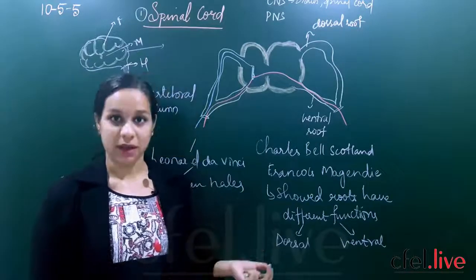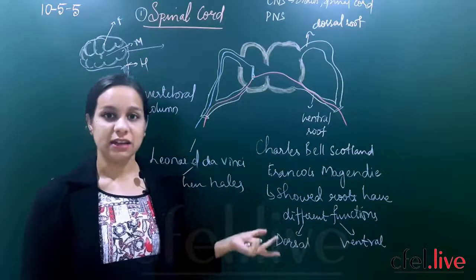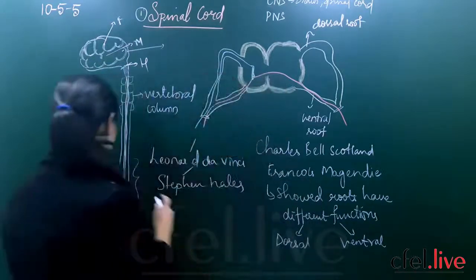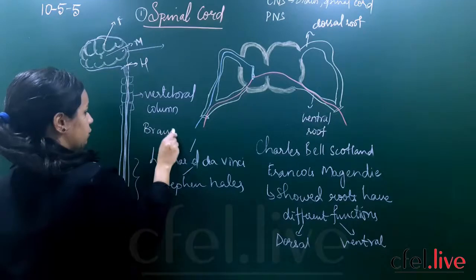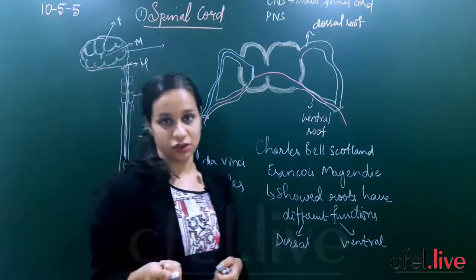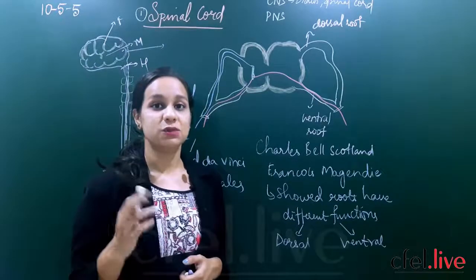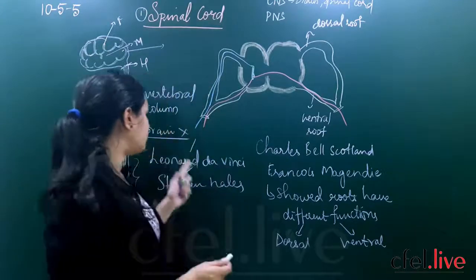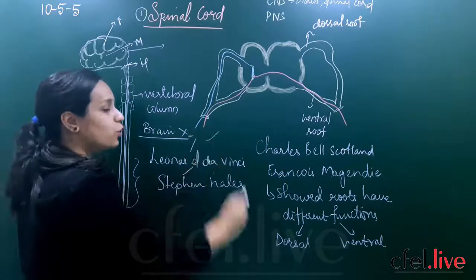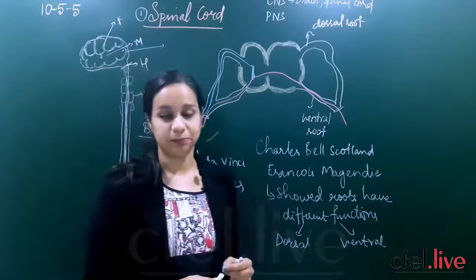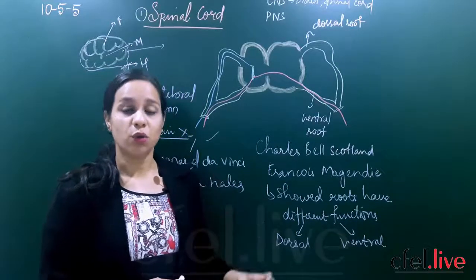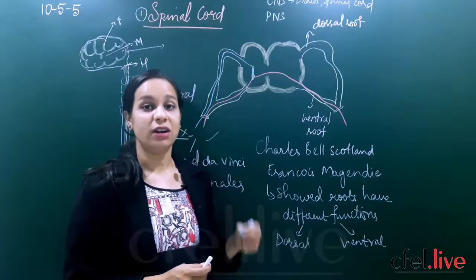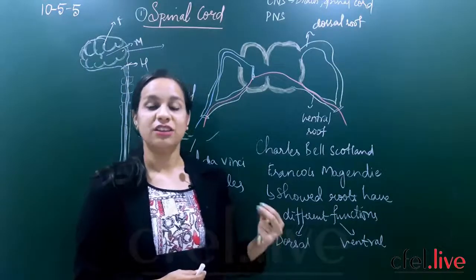But later, two major scientists — Leonardo Da Vinci and Stephen Hales — were very important in recognizing that there is some functioning of the spinal cord. They conducted experiments on a frog and found that whenever the brain of the frog was removed, the whole body was still functional. This proved that the earlier scientists were wrong, because body functioning and muscular movements were still seen even without the brain.